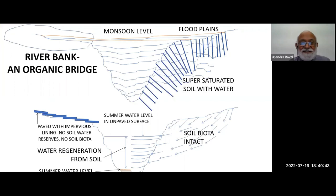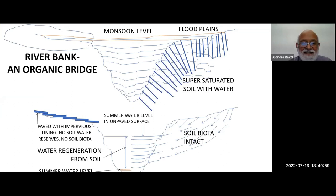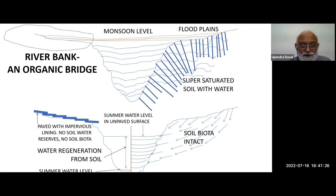What happens between land and water? We have a river bank as an organic bridge. On the right you can see the surface is not paved — it's natural. So the soil biota and soil moisture is intact. As a result, the summer water level does not fall way below. Where we have paved impervious lining, there are no soil water reserves, no soil biota, and water regeneration from the soil is not available.